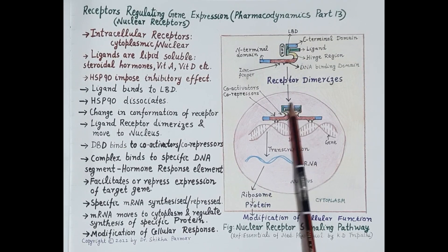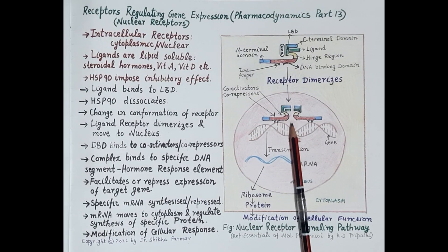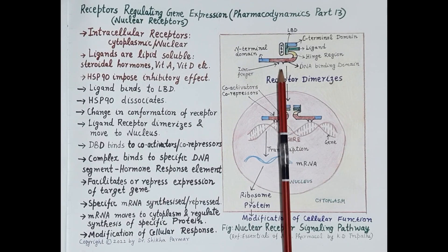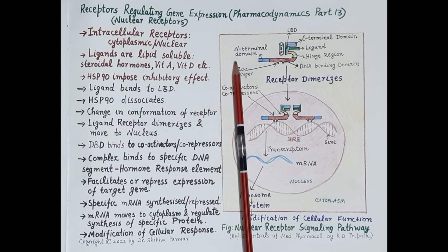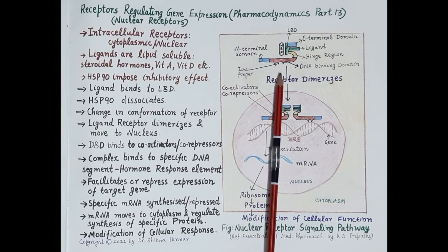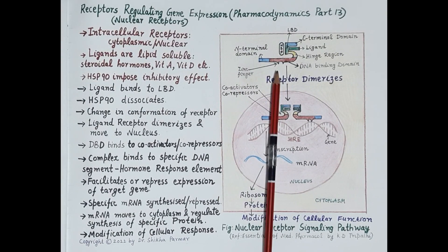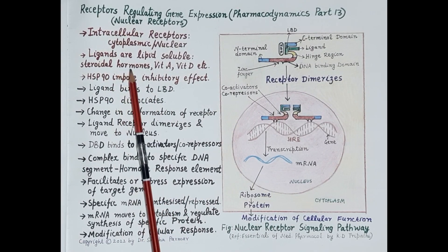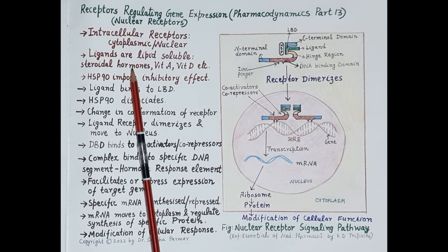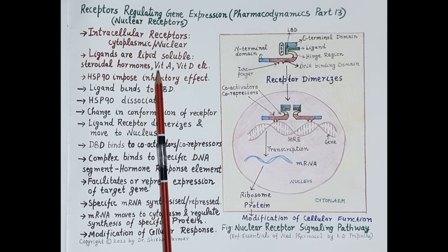It is an intracellular receptor present in the cytoplasm, or it can also be a nuclear receptor where the receptor is present in the nucleus. Since the receptor is present inside the cell, a ligand has to cross the cell membrane to reach it. Therefore, ligands for this receptor are lipid soluble — for example, steroidal hormones like glucocorticoids, mineralocorticoids, and androgens.